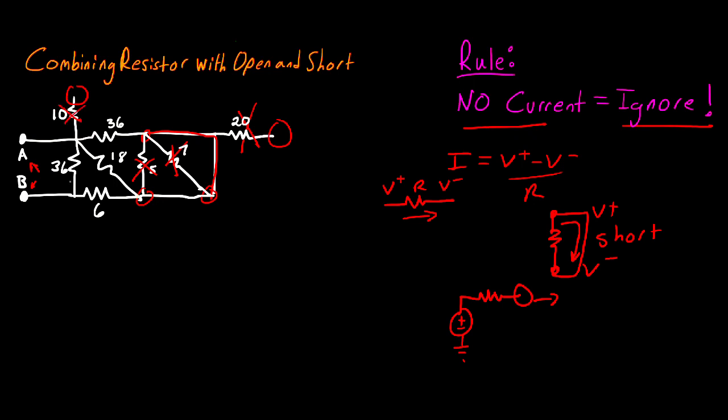At this point, I'm going to redraw the circuit with the simplifications that I've made so far. So I've gone ahead and redrawn the circuit up to this point, and we notice that the 36-ohm resistor and the 18-ohm resistor share the same potential on both sides. So that means that these two are going to be in parallel.